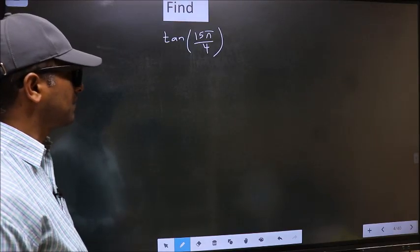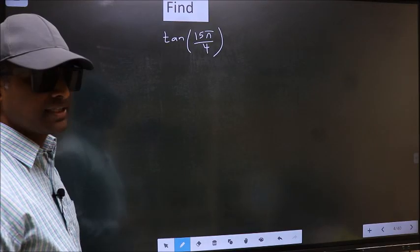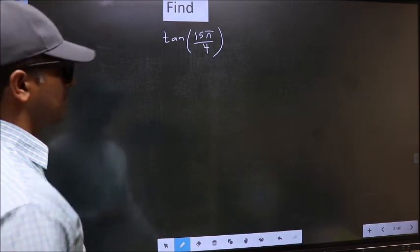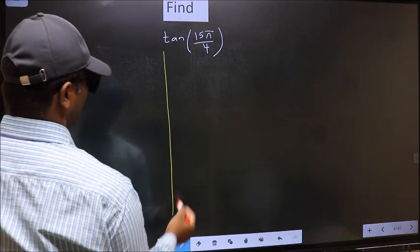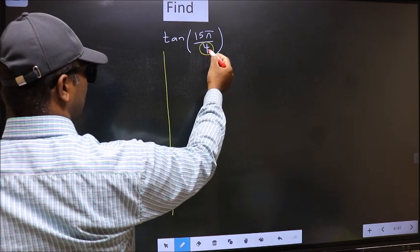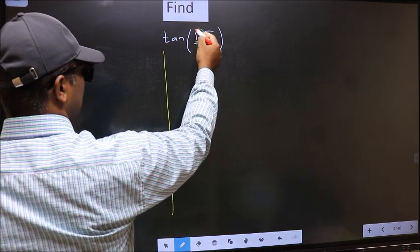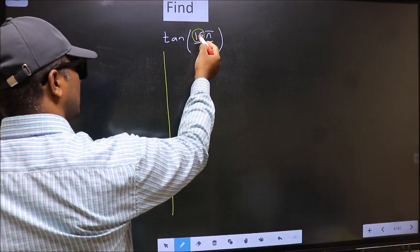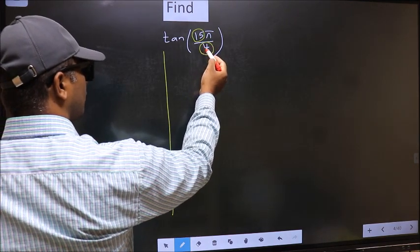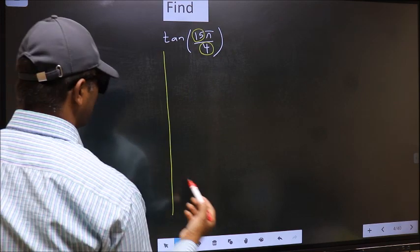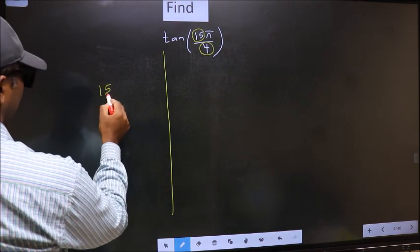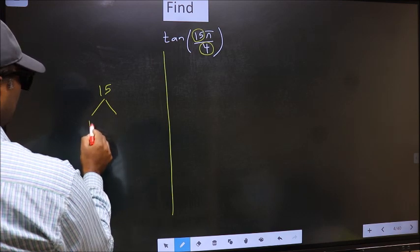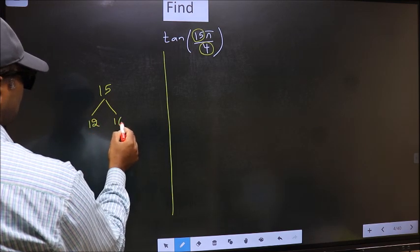Find tan(15π/4). To find this we should follow this method. In the denominator we have 4 and in the numerator 15. Now you should check which multiple of 4 is closest to 15. Here you should write multiples of 4, that is 12 and 16.